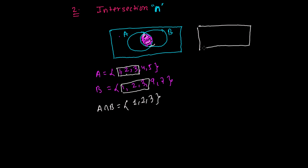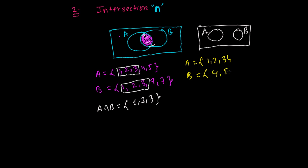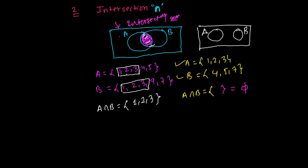Now, sometimes sets are disjoint. If set A is {1, 2, 3} and set B is {4, 5, 7}, nothing is common between them. So A intersection B is phi — the empty set. We only meaningfully discuss intersection in the case of intersecting sets, not disjoint sets.